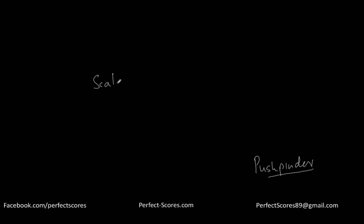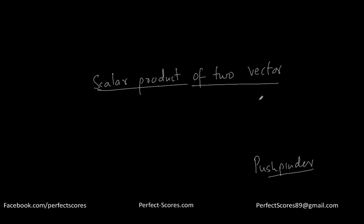Hey there guys, welcome to this video. My name is Pushpinder Gill and in this video we are going to be talking about scalar product of two vectors. Now vectors are pretty interesting — their multiplication can actually take two turns. The first type is the scalar product of two vectors, also called the dot product.